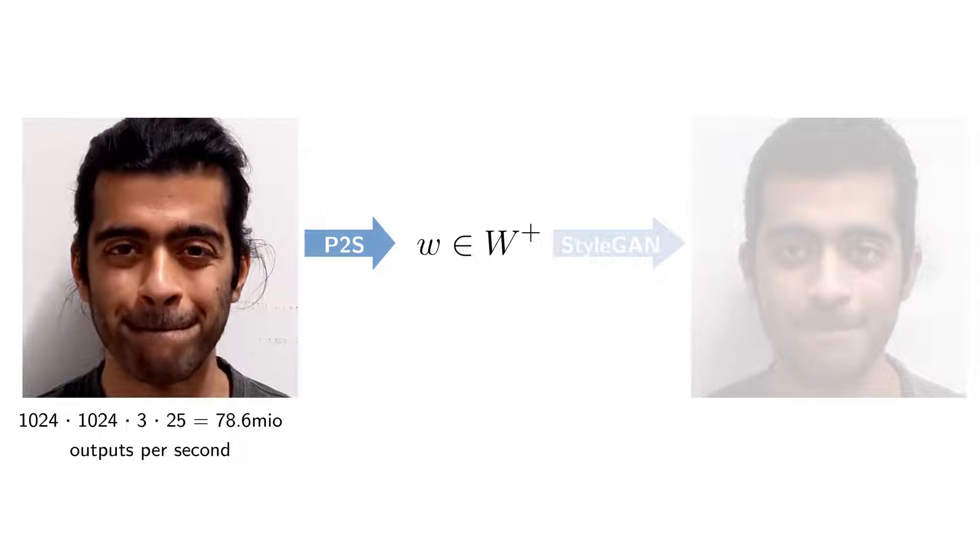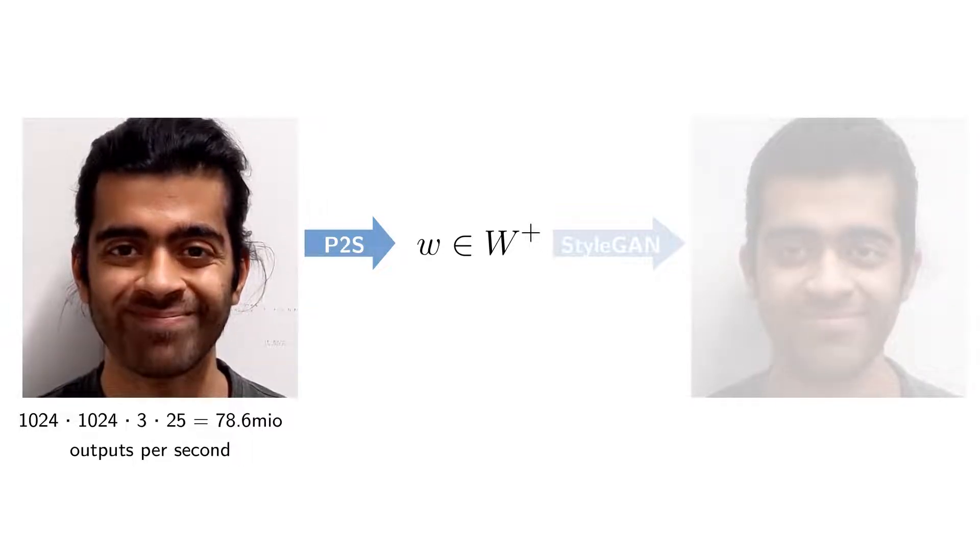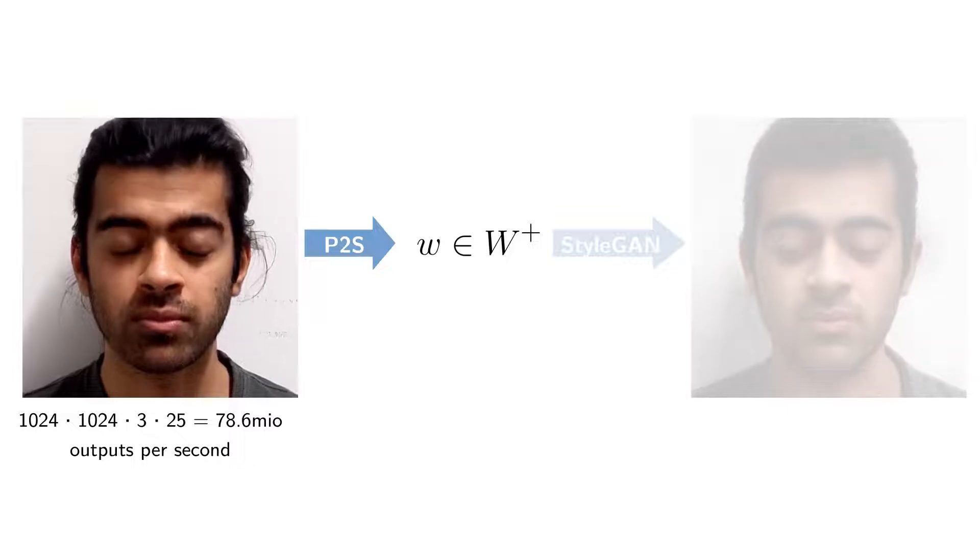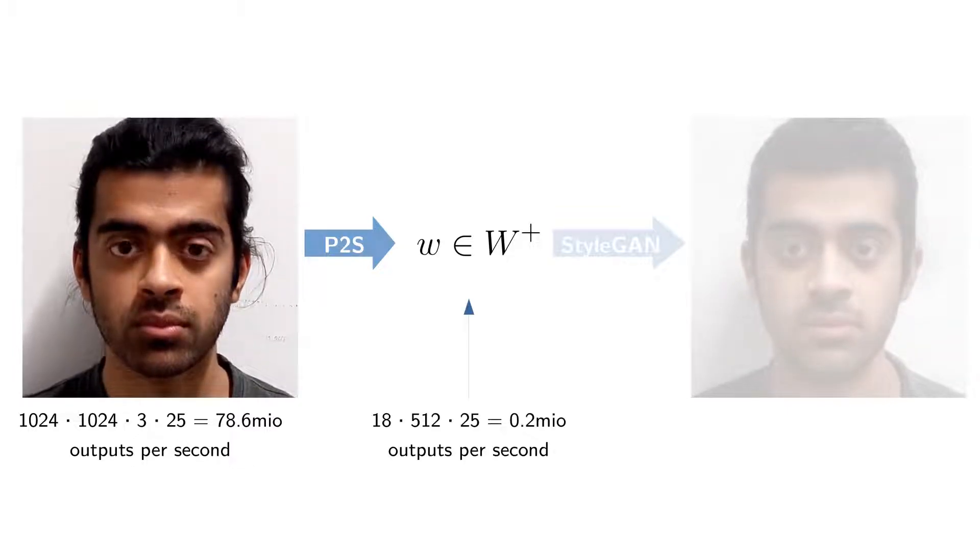Our task is now to produce not sequences of frames anymore, but sequences of W+ vectors, which for 25 frames now only amounts to 0.2 million outputs.